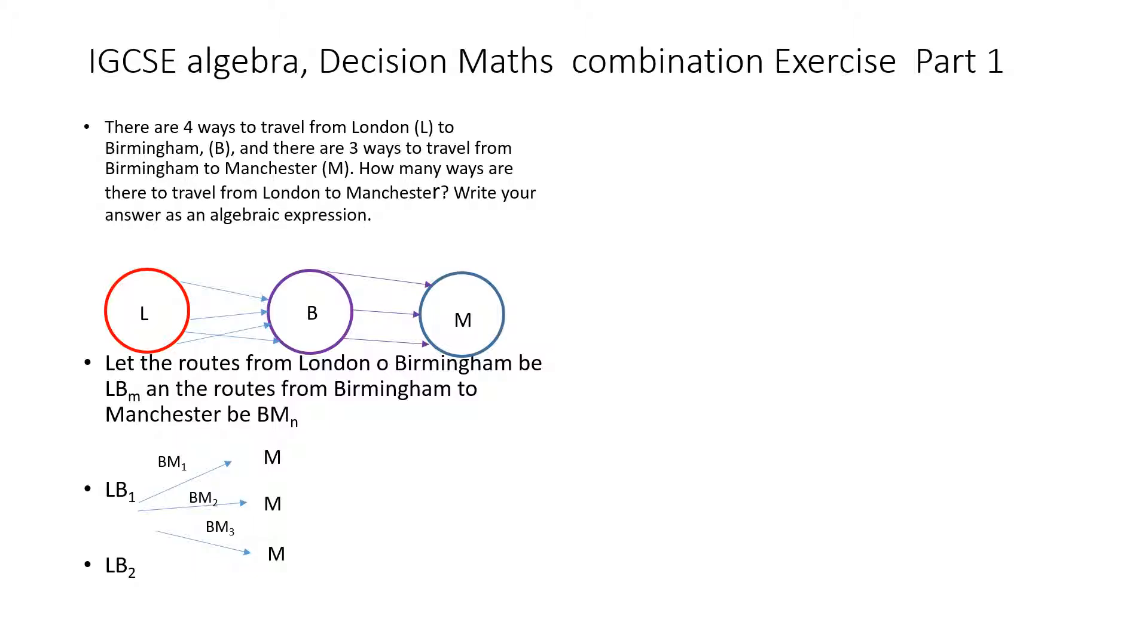From London to Manchester in succession using two operations - the first operation is from London to Birmingham and the second operation is from Birmingham to Manchester. To get from London to Manchester in two operations in succession, the number is four times three, which is 12.